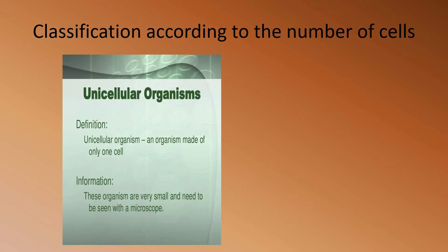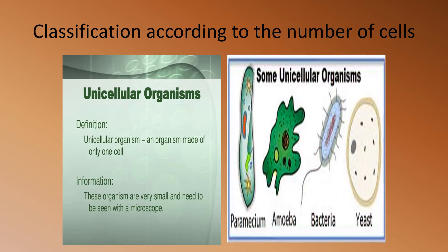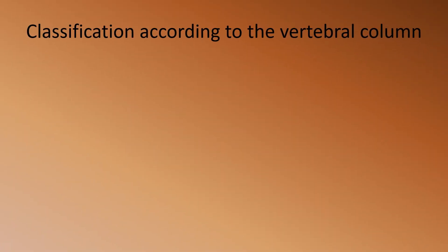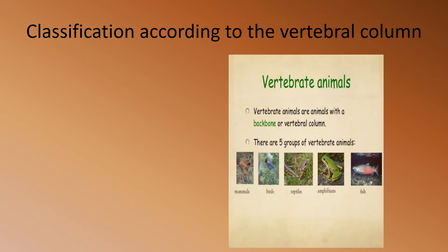Unicellular organisms are made of one cell. These organisms are very small and need to be seen with a microscope — that means you cannot see them with your naked eyes. Some examples of unicellular organisms are paramecium, amoeba, bacteria, and yeast.